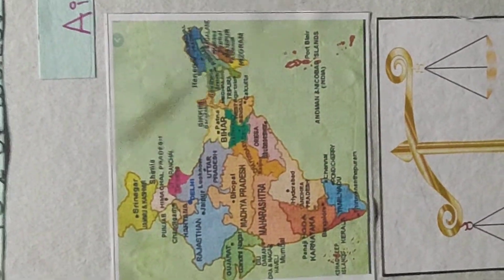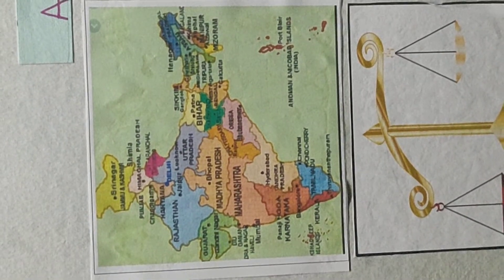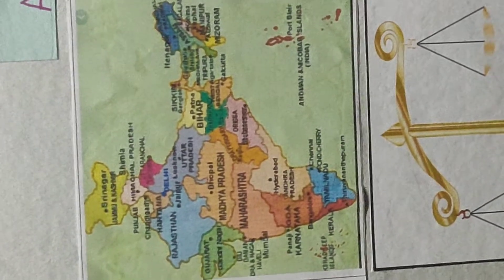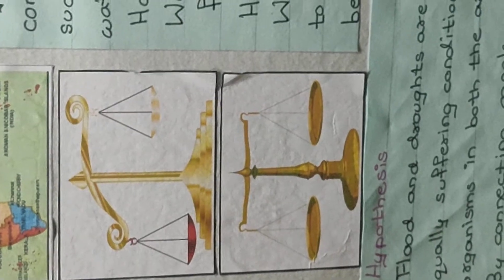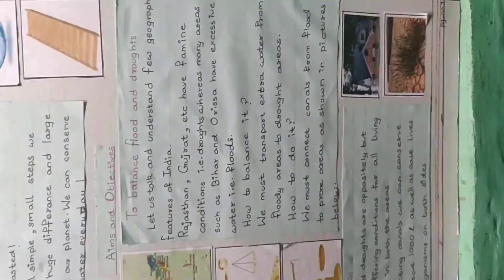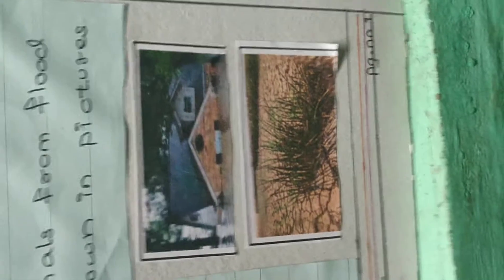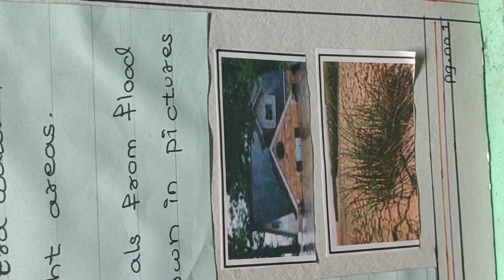Rajasthan and Gujarat have famine conditions, i.e. droughts, and many areas such as Bihar and Orissa have excessive water, i.e. floods. How to balance it? We must transport the extra water from the flood areas to the drought areas by connecting canals from flood prone areas to drought prone areas.